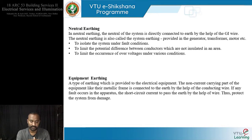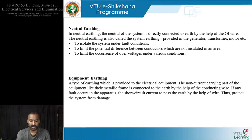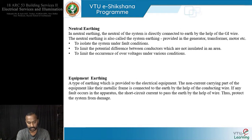There are two types of earthing: neutral earthing and equipment earthing. In neutral earthing, the neutral of the system is directly connected to the earth with a wire — this is also called system earthing, provided in generator and transformer applications. The idea is to isolate the system under fault conditions, limit the potential difference between uninsulated conductors, and limit the occurrence of overvoltages. Equipment earthing connects the non-current-carrying metallic frame of equipment to earth, so that any fault current passes to earth via the wire, protecting the system from damage.